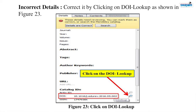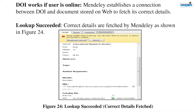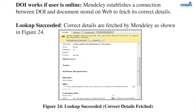The DOI number has been mentioned for this article. If you see along with the DOI number, on the right side is the lens button — click on this lens button to do a lookup. If you are online, Mendeley then establishes a connection between the DOI and the document stored on the web to fetch its correct details. If the details are fetched correctly, your lookup succeeds as shown in figure 24. Note that the name of the journal, year, volume, and pages are now fetched by Mendeley. Issue is not fetched — this is because it is not always the case that every journal has an issue, so it can be vacant.